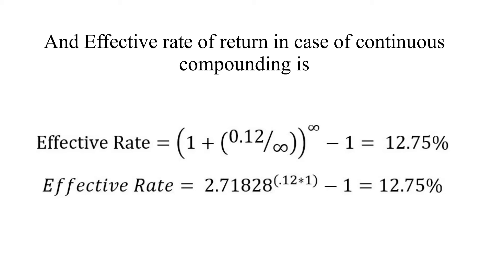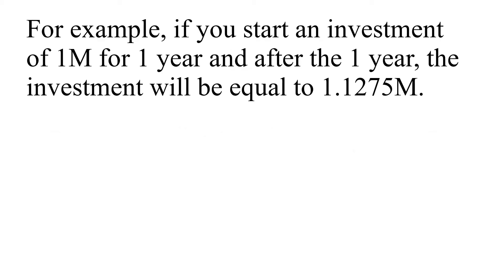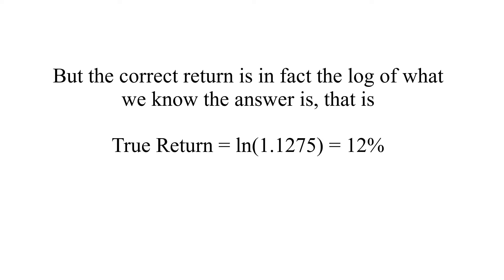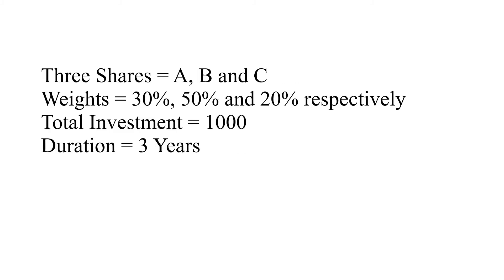For example, if you start an investment of 1 million for one year and after one year the investment is equal to 1.1275 million, we are getting a slightly higher amount than 1.1268 million because the interest is earning interest on itself all the time. But the correct return is in fact equal to the log of the ending value — that is log of 1.1275 — which equals 12 percent.